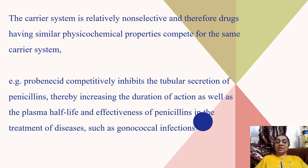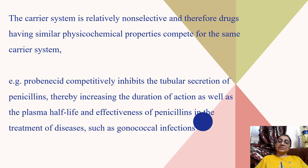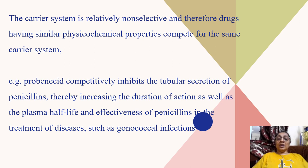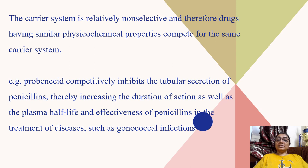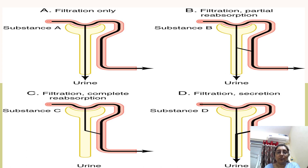The carrier system is relatively non-selective, so drugs with similar physicochemical properties compete for the same carrier. For example, probenecid and penicillin both have similar physicochemical properties and compete to bind to the carrier protein. Probenecid binds with the carrier protein and is excreted in urine, while penicillin remains in the body, increasing the efficacy and half-life of penicillin. Therapeutically, penicillin can be given with probenecid to increase the efficacy of penicillin.